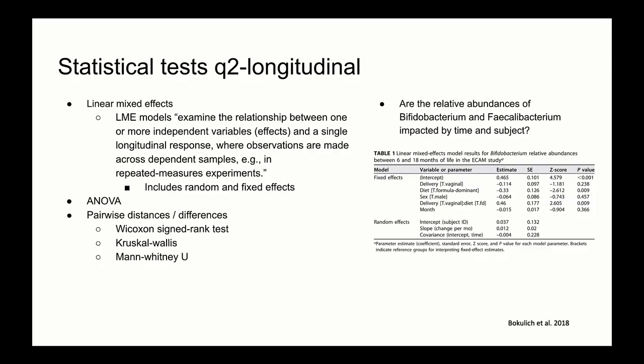These models are able to account for both fixed and random effects. As Dr. Burcham pointed out, you can think of fixed effects as factor levels with all levels of interest accounted for. In the ECAM study, the fixed effects include variables like diet, delivery mode, and sex. On the other hand, random effects include a number of possible measurements that encompass a degree of variation. In the ECAM study, random intercepts for subject ID and random slopes for month of life are included as random effects.